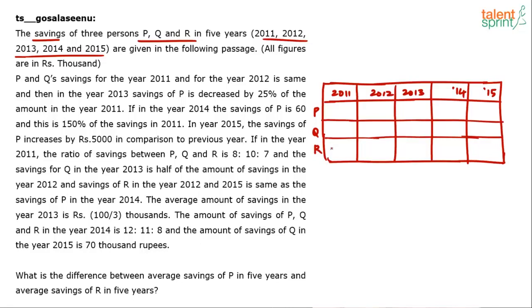The first clue: P and Q's savings for the year 2011 and for the year 2012 are the same. This means P's savings in 2011 equals P's savings in 2012, and Q's savings in 2011 equals Q's savings in 2012.